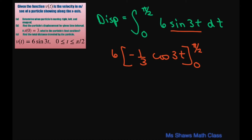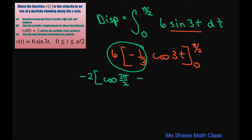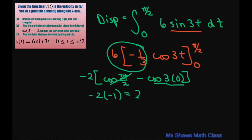This gives us negative 2 times cosine of 3pi divided by 2 minus cosine of 3 times 0. Cosine of 3pi over 2 equals zero, and cosine of 0 equals 1. So we have negative 2 times negative 1, which equals 2. The displacement is 2 meters.